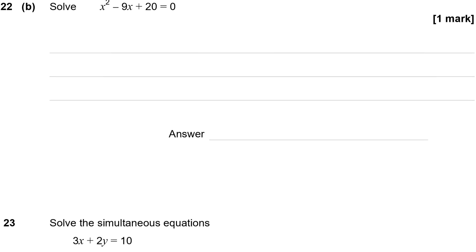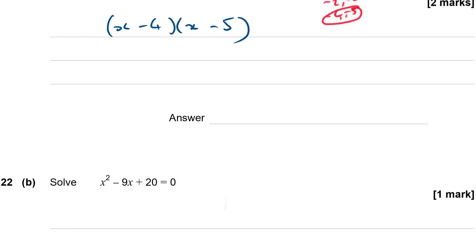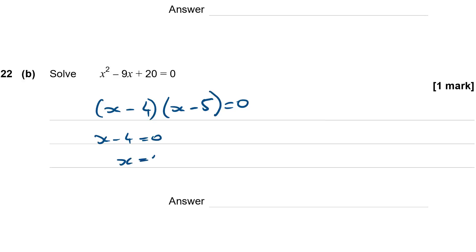Question 22b: Solve x squared minus 9x plus 20 equals zero. That's the same expression as above, so I can factorise it the same way: (x minus 4)(x minus 5) equals zero. When two things multiply to give zero, one must have been zero to start with. So either x minus 4 equals 0, giving x equals 4, or x minus 5 equals 0, giving x equals 5. The answer is x equals 4 or x equals 5 — two solutions.